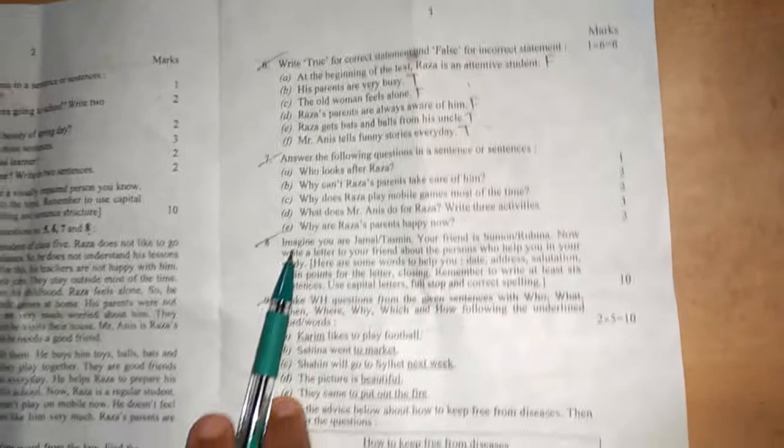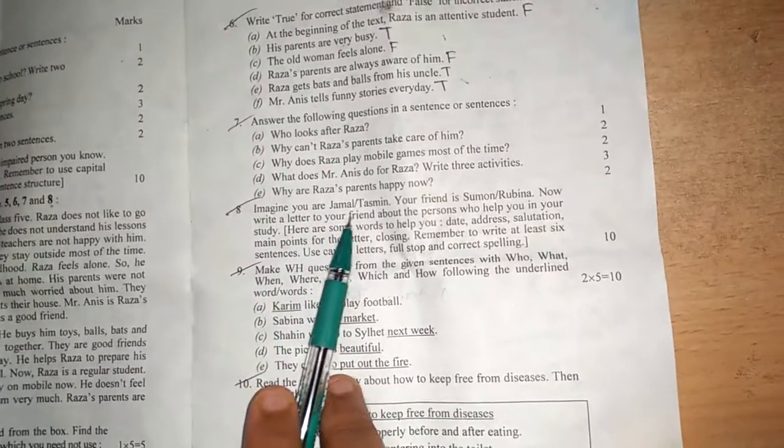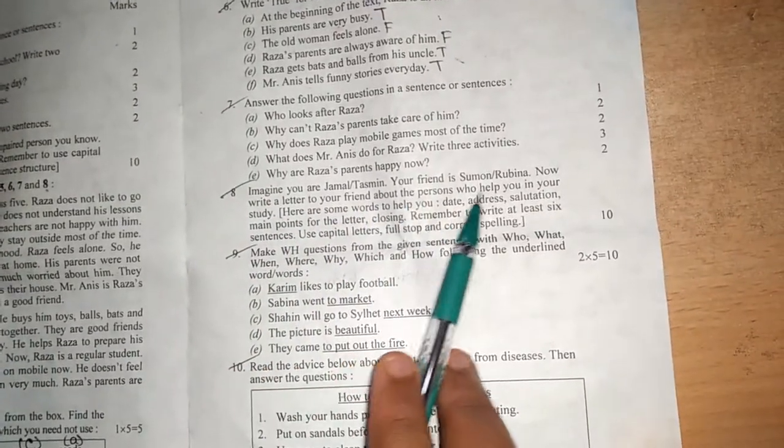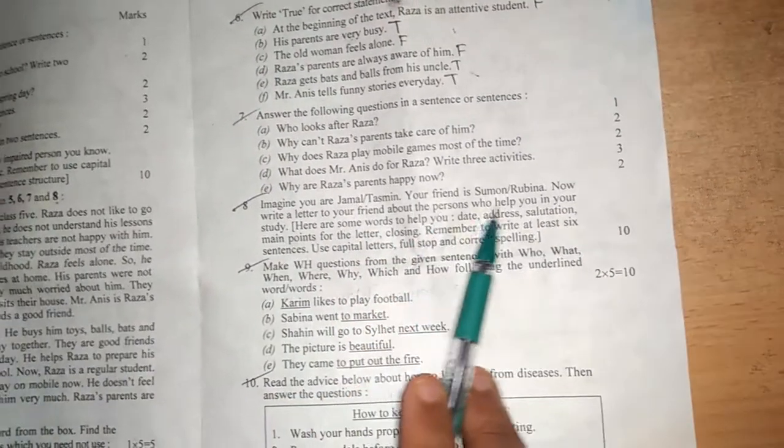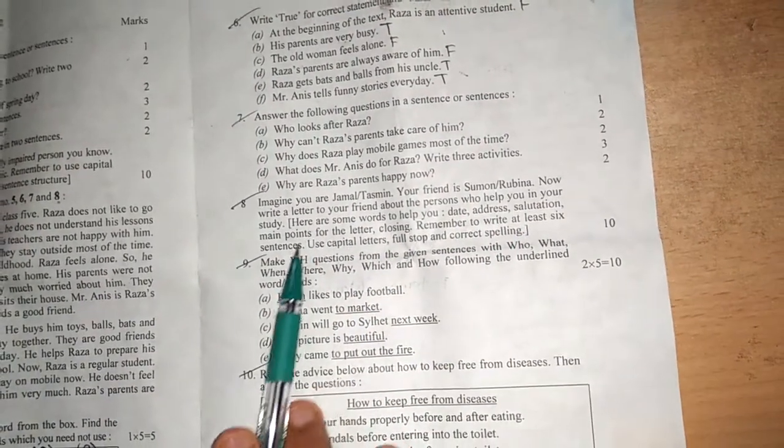Short questions from the given unseen passages. Now in number eight, it is letter here. Imagine you are Jamal Tasmin, your friend Shuman Robina. Now write a letter to a friend about the person who helped you in your study.